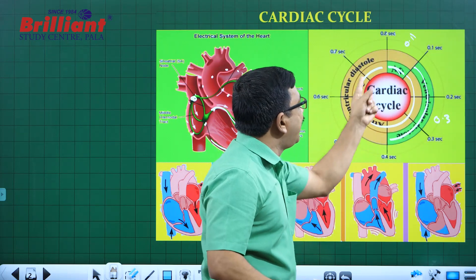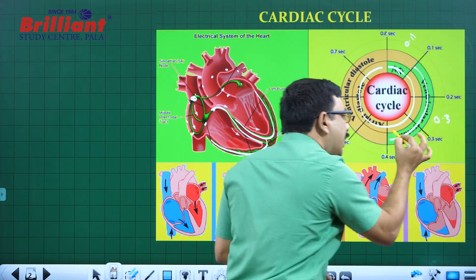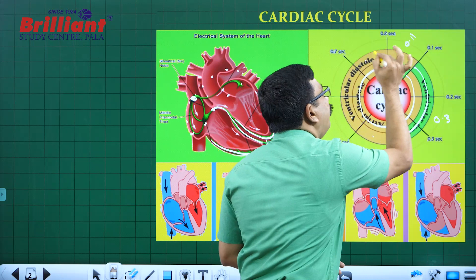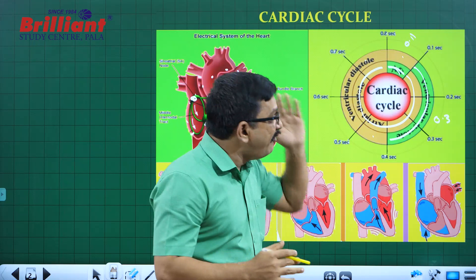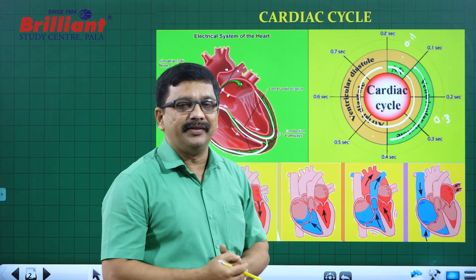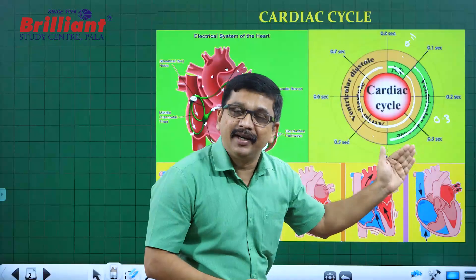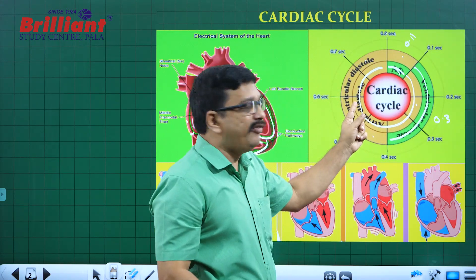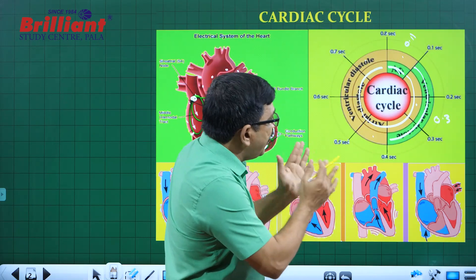The remaining time after atrial systole — 0.7 seconds — the atria are in a state of diastole, called atrial diastole. Ventricular systole is 0.3 seconds. The remaining 0.5 seconds, the ventricles are in a state of relaxation, called ventricular diastole. The inner circle represents the atrial events and the outer circle represents the ventricular events.